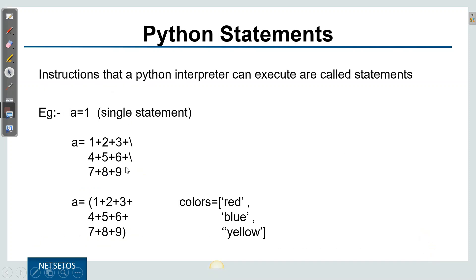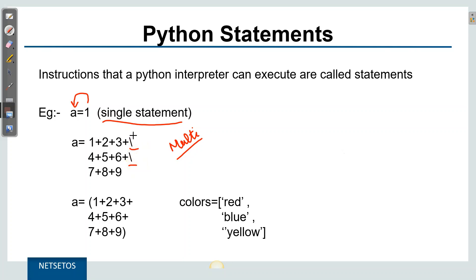Then comes Python statements — these are instructions that a Python interpreter can execute. For example, 'a = 1' is a single statement where one is assigned to a variable. Coming to multi-line statements, you can put a backslash at the end of your statement, or an easier way is to use round braces, square braces, or curly braces — the interpreter will understand everything from the opening brace to the closing brace as part of a single statement.